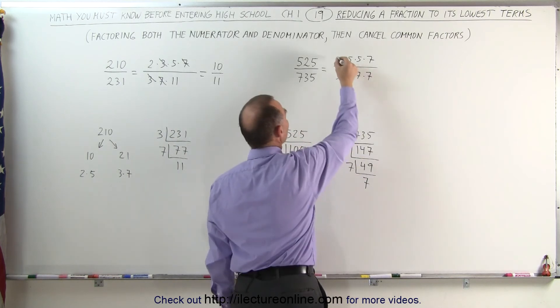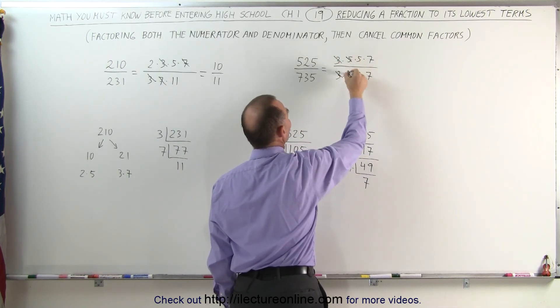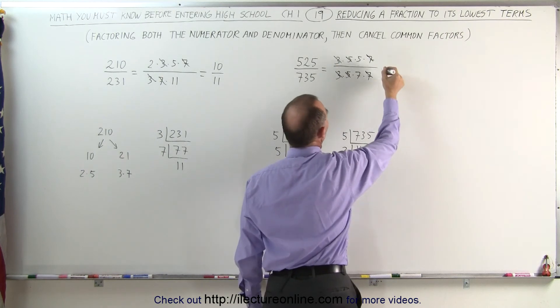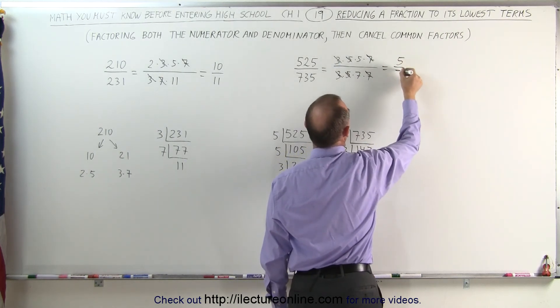Now the fun part. We can cancel out the 3s, we can cancel out the 5s, we can cancel out one of the 7s, and we're left with 5 divided by 7.